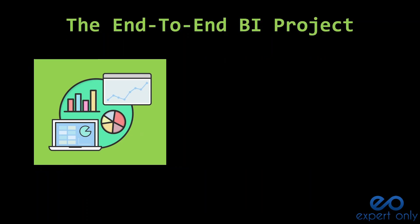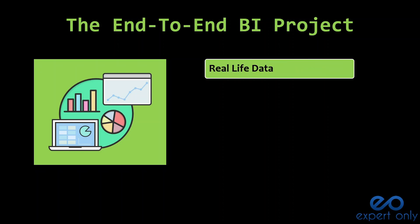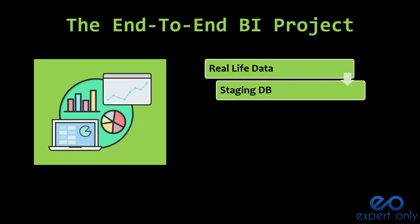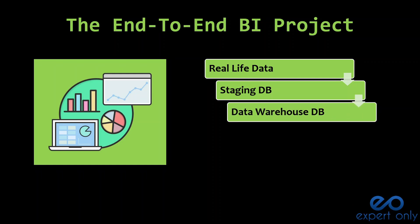The real-life end-to-end BI project that we are going to build during one big section of the training is very practical. We are going to take real-life data, load it into our staging database using different SSIS packages, and then load this data into our data warehouse using SQL scripts and the traditional and very famous star schema, which is very commonly used in business intelligence and data warehousing.